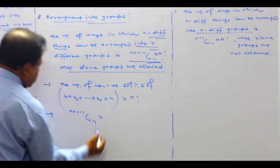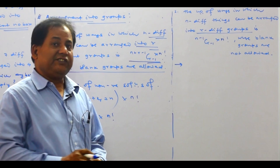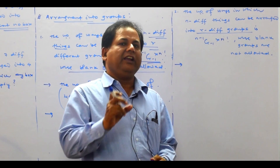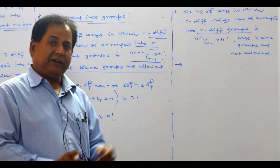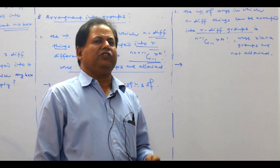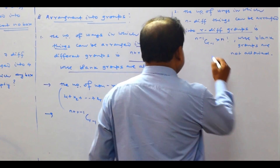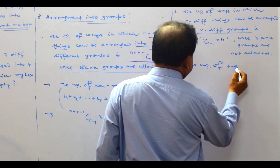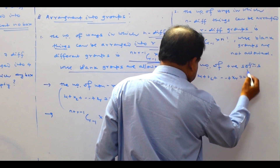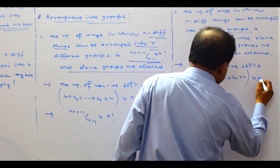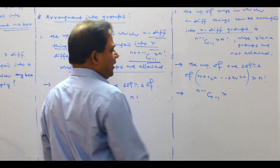So the number of non-negative solutions is (N+R−1)C(R−1) into N factorial. For blank groups not allowed, the formula is (N−1)C(R−1) into N factorial, where you find the number of positive solutions of x1 + x2 + ... + xR = N, and N objects can be arranged in N factorial ways.